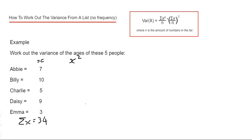So x² is just our data value squared. So our first one is 7 squared, which is 49. 10 squared is 100. 5 squared is 25. 9 squared is 81. 3 squared is 9.